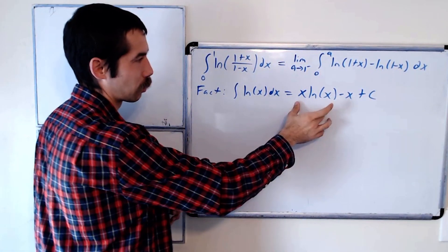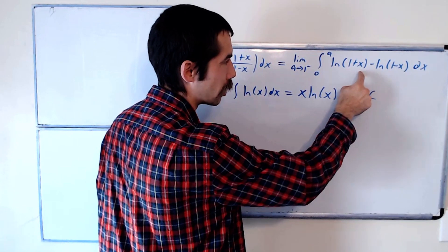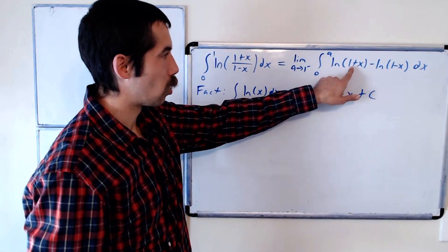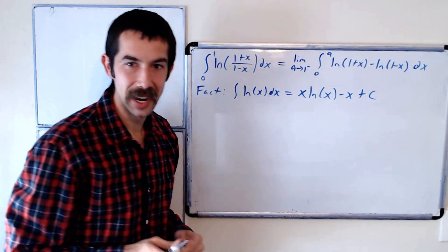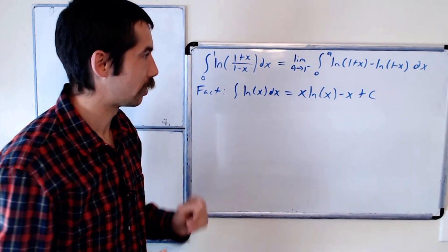And so we're going to use this fact twice using a u substitution. The first u substitution will be u equals 1 plus x. The second one will be u equals 1 minus x, so du will be negative dx.